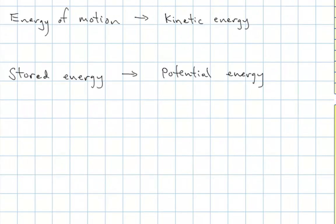I'm going to focus on two right now in mechanics, the two that we deal with most of the time. Energy of motion, which we call kinetic energy, and stored energy, which we call potential energy. Kinetic energy we usually use K, and it's one half mv squared — one half the mass times the square of the velocity. It depends on the speed of the object.